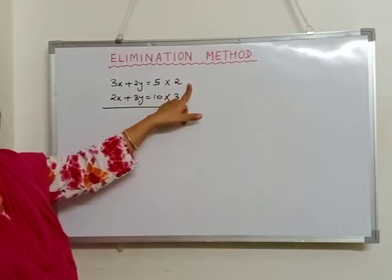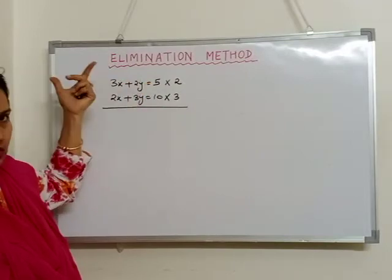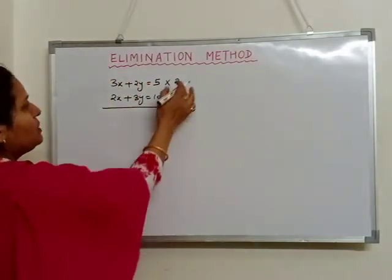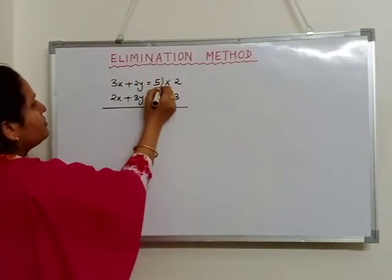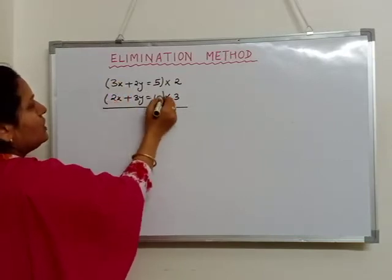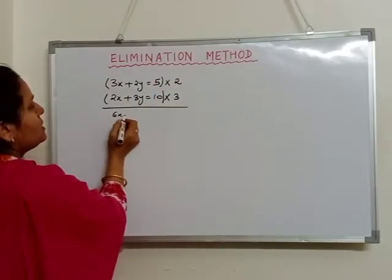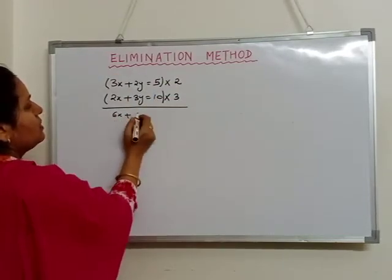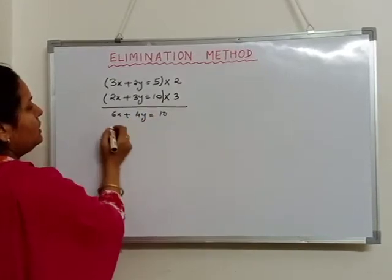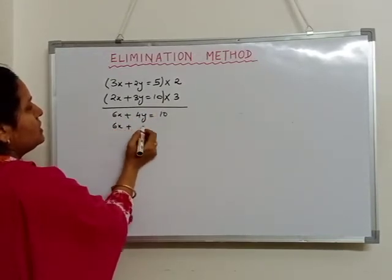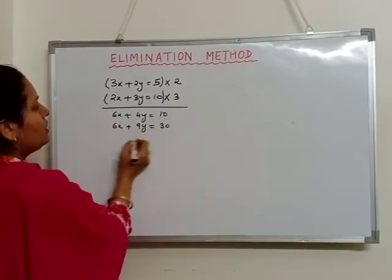Now since 2 is multiplied, we have to multiply 2 with the whole equation. That means 2 multiplied by 3x gives 6x, plus 4y, is equal to 10. And the second equation becomes 6x plus 9y is equal to 30.